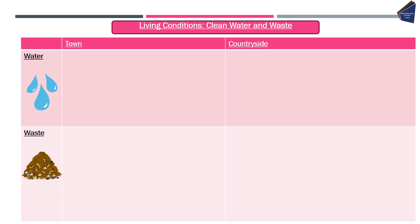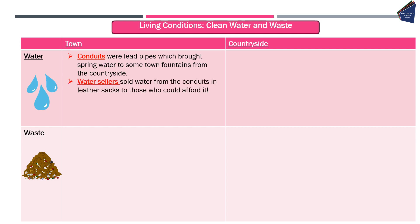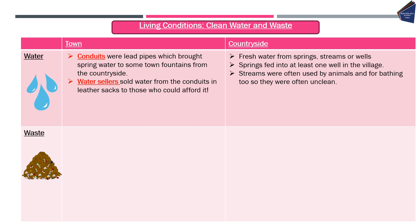In towns, conduits — lead pipes — brought spring water to town fountains from the countryside. Water sellers then sold water collected from conduits in leather sacks to people who could afford it. In the countryside, the vast majority of people got their fresh water from springs, streams or wells. Streams were often used by animals and for bathing too, so the water was often unclean. People hadn't yet made the link between contaminated water and disease.